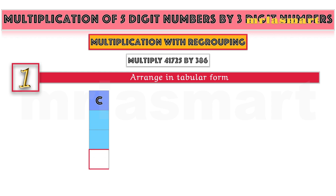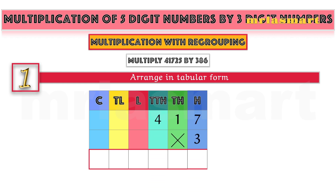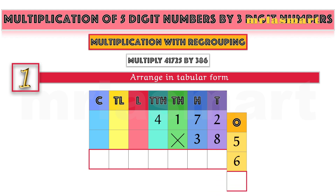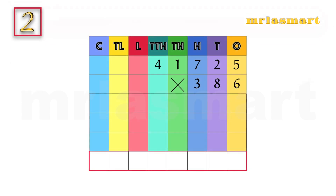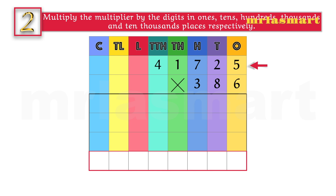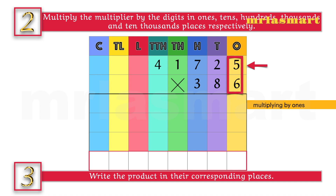Multiply 41,725 by 386. Arrange in tabular form. Multiply the multiplier by the digits in ones, tens, hundreds, thousands, and ten-thousandths places respectively.